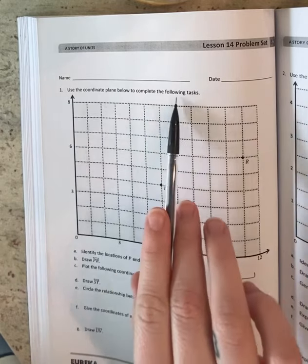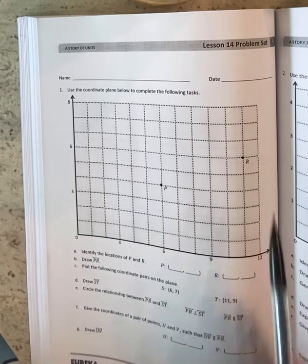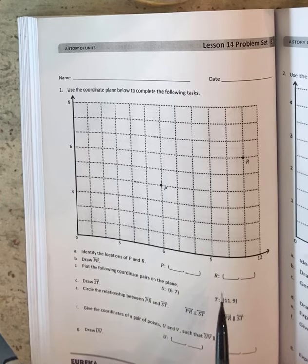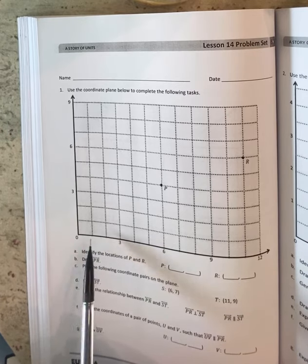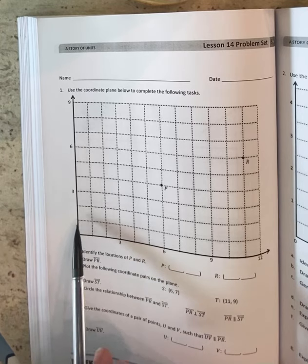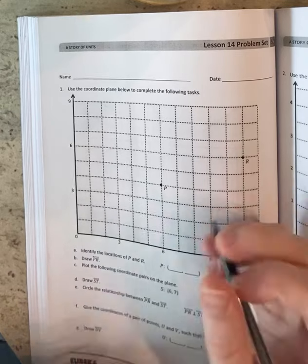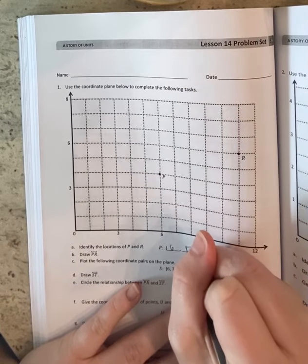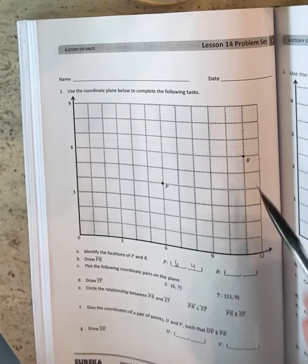All right. They want us to use the coordinate plane to complete the following tasks. Identify the locations of P and R. So here they're just asking for the coordinates. I want to look at this range. It looks like they are going one, two, three. This is each one. Okay. So P is at 6, 4. And R is at 11, 6.